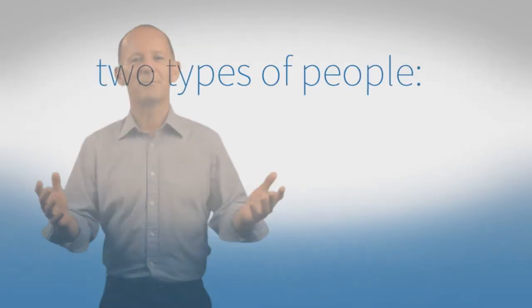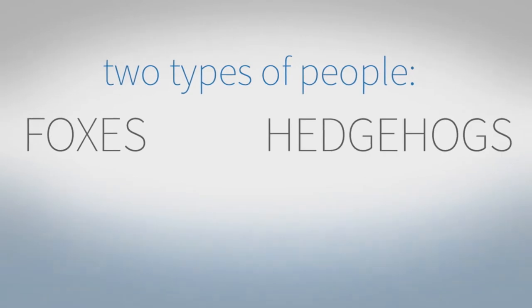The idea came from Isaiah Berlin's story about the fox and the hedgehog, a very famous story. In it he divides people into two types, foxes and hedgehogs.